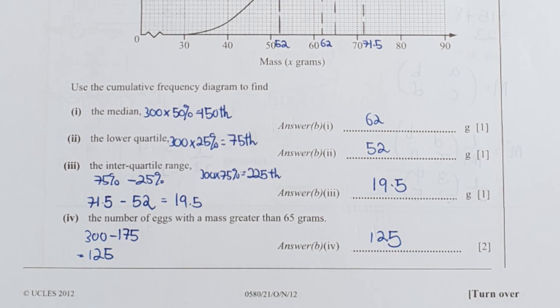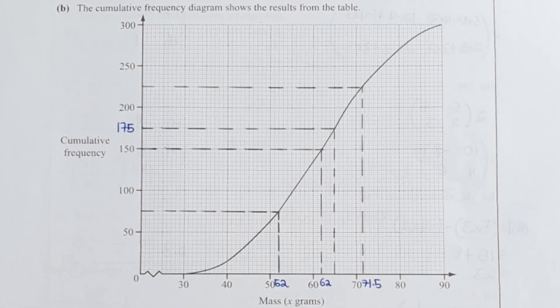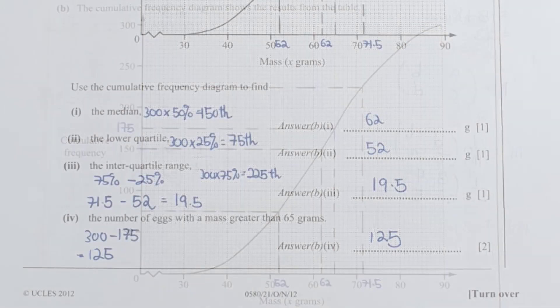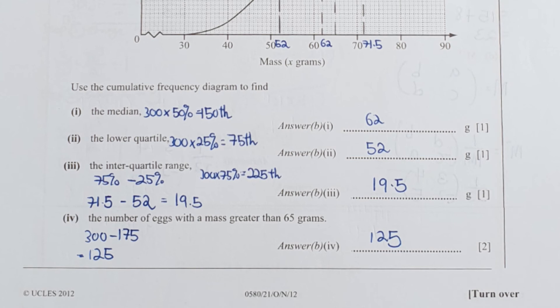For the third part, I defined the interquartile range at 75%. My result will be 225. I drew it down, I get a value of 71.5. Minus it with the lower quartile result of 52, you will get your result as 19.5.